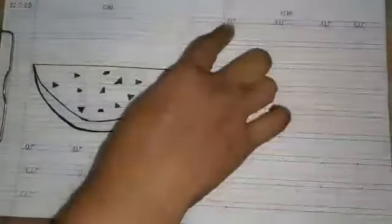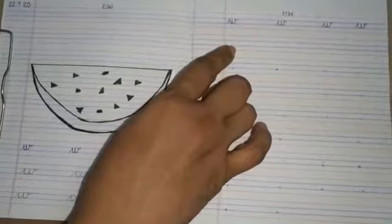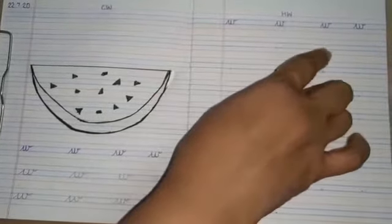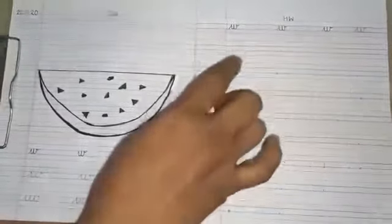Now, this page is for your homework. Your parents will write letter W on the first line. And parents, you are also requested to put the dots. Now, you put four dots. And keep equal distance between the dots.